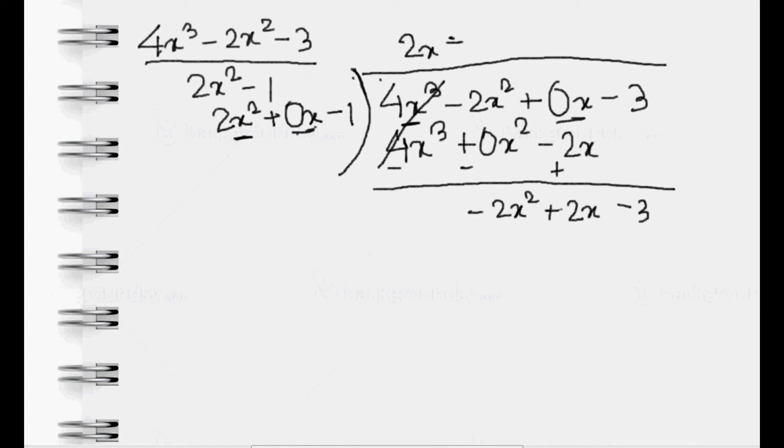Now we have to convert 2x. To convert 2x to -2x², we have to multiply by -1. 2x² into -1 is equal to -2x². So we write -2x². Now we have to multiply the rest of the divisor with -1.